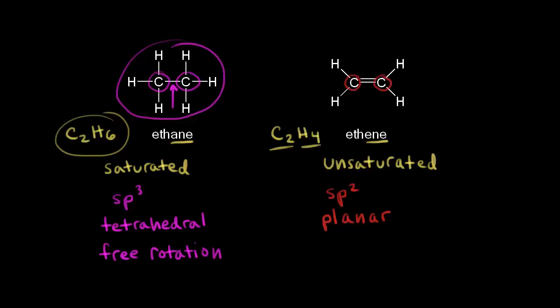But for ethene, if we look at those two carbon atoms, there's a double bond between them. We know that there's no free rotation around a double bond, so you're not going to get different conformations for ethene — no free rotation, so no conformations. And that affects the structure of your alkenes.